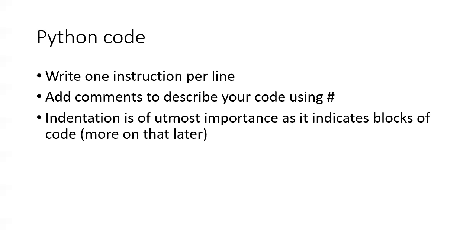We write one instruction at a time. When I opened up the IDLE IDE, you would have seen the thing with the three chevrons — I was only able to use one line of code at a time. If I wanted to do a whole program, I have to save it as a file, and then the Python interpreter will implement it one line of code at a time. We do use comments with a hash symbol. Anything to the right of a hash symbol on a line will be disregarded by the interpreter — Python just doesn't look at it. It's there for us to notice what we're doing in our work.